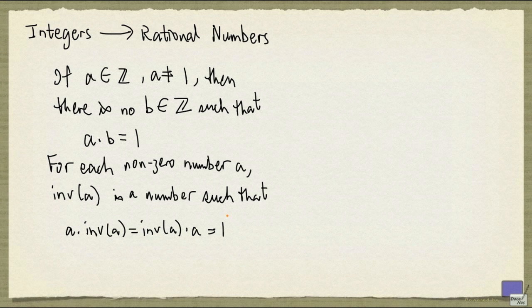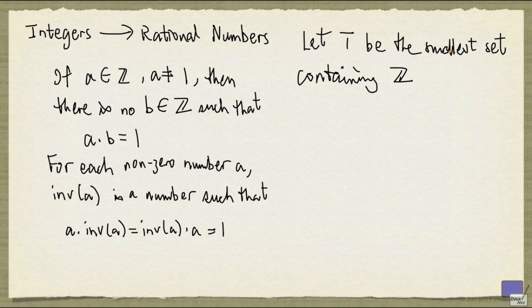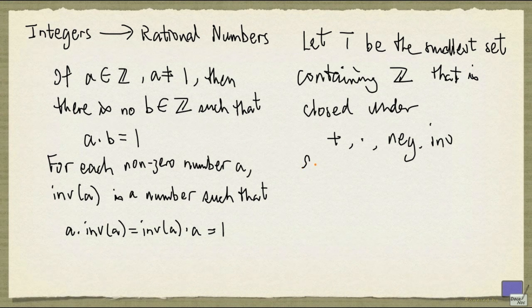So what we're going to do now is let T be the smallest set containing the integers that is closed under addition, multiplication, negation, and inverse, satisfying the following rules.